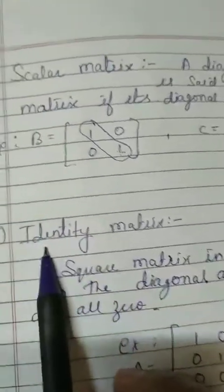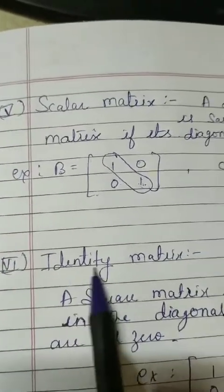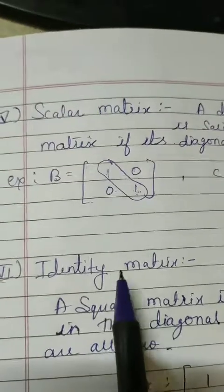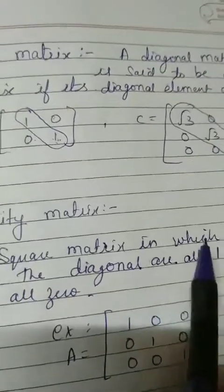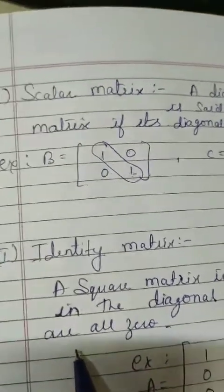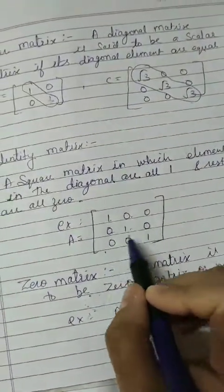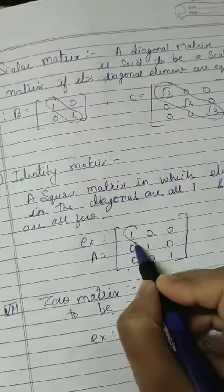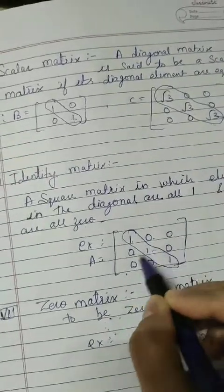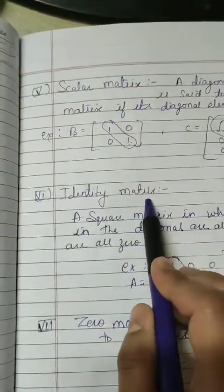Now moving on to the identity matrix. Identity means 1. The definition: a square matrix in which all diagonal elements are 1 and all other elements are 0. For example, A equals the matrix with 1, 0, 0 / 0, 1, 0 / 0, 0, 1 — the diagonal value is always 1 and the rest are 0. This is known as an identity matrix.